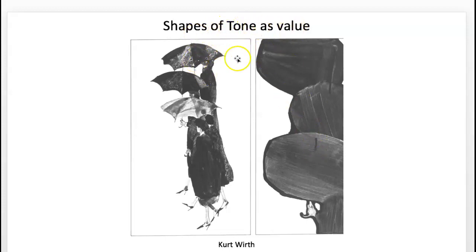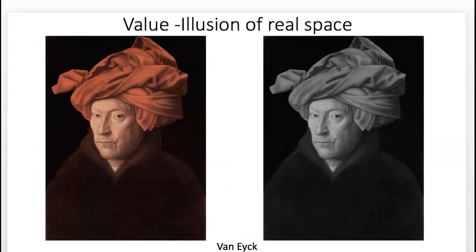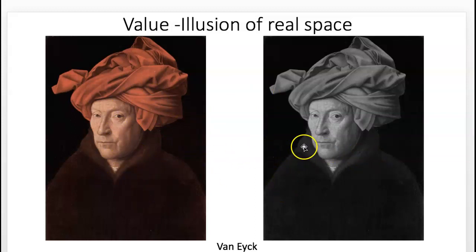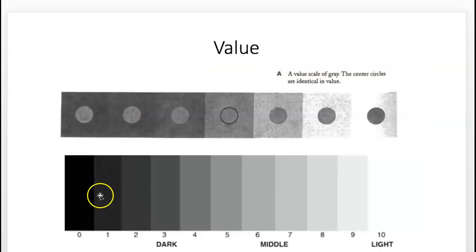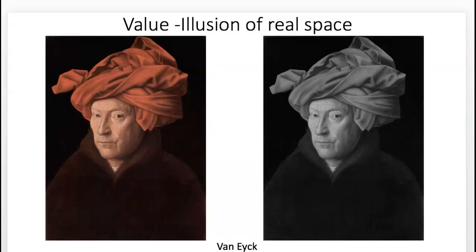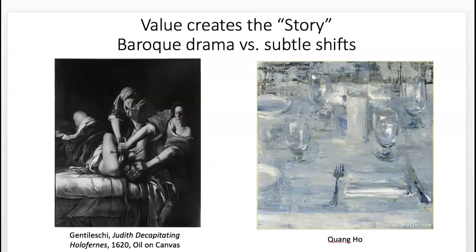Value is how we get an illusion of real space in paintings. I'm going to show you the color version and the achromatic value version so you can see what I mean — colors have value. The reds are lighter, the pinks and whites, and this really dark brown in color becomes nearly that darkest value. You can see it's what gives us a feeling of illusion in painting and drawing, and helps add even more of an illusion beyond correct proportions and accuracy.